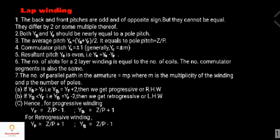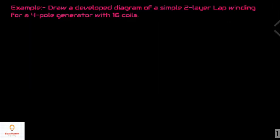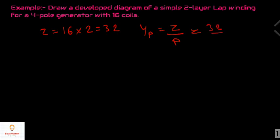Now let's take an example: draw a developed diagram of a simple two-layer lap winding for a four-pole generator with 16 coils. Since the generator has 16 coils, the number of conductors equals 16 multiplied by 2, which equals 32 conductors. The pole pitch Yp equals the number of conductors per pole, given by Z divided by P, which equals 32 divided by 4, equals 8. So the pole pitch equals 8.